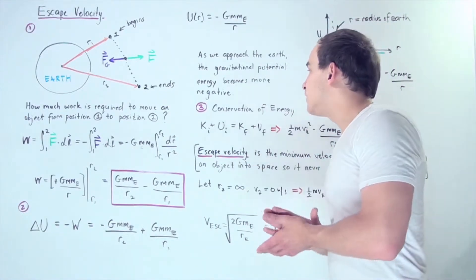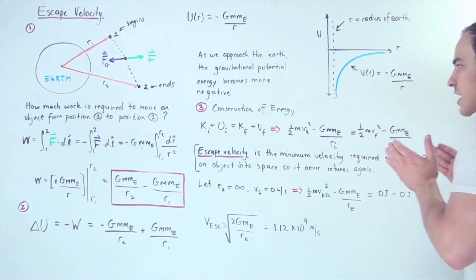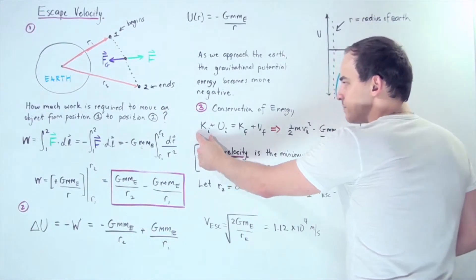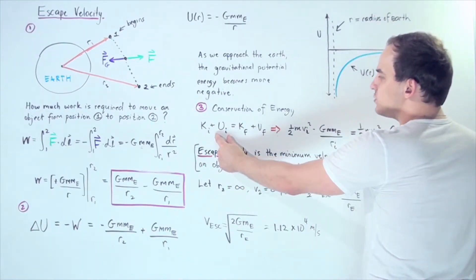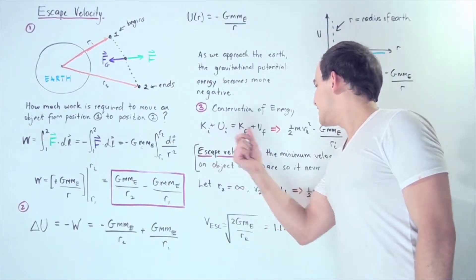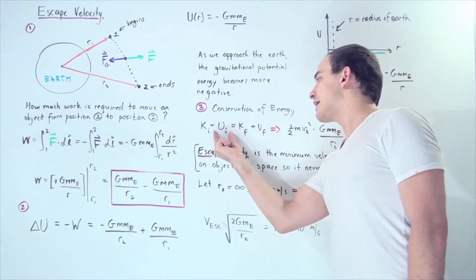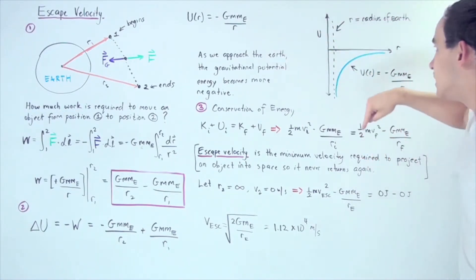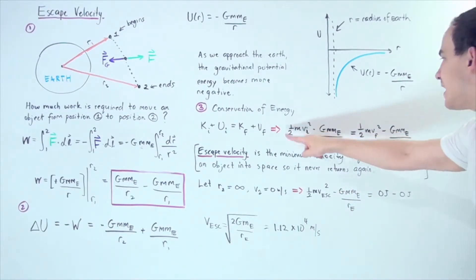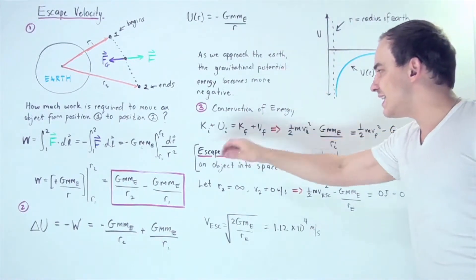Now let's discuss escape velocity using conservation of energy. The conservation of energy states that the initial sum of all energies equals the final sum of all energies. So initial kinetic energy plus initial gravitational potential energy equals final kinetic energy plus final gravitational potential energy: one-half m·vi² minus G·m·M_E divided by the initial distance ri equals the same with final velocity and final distance rf.